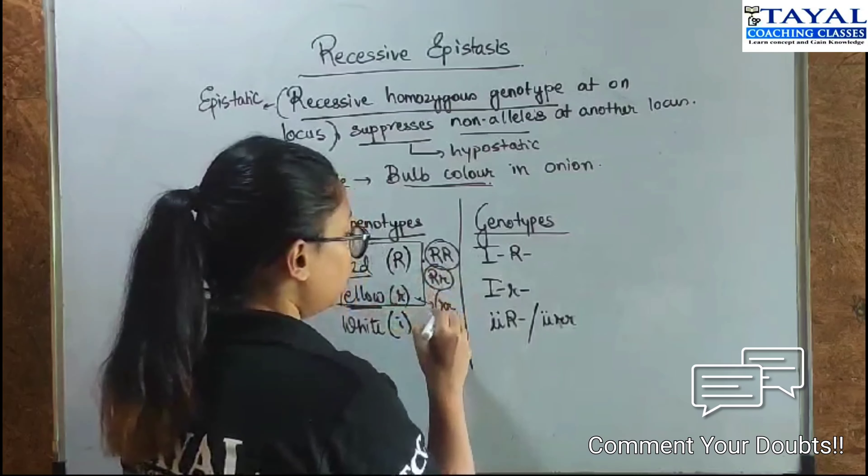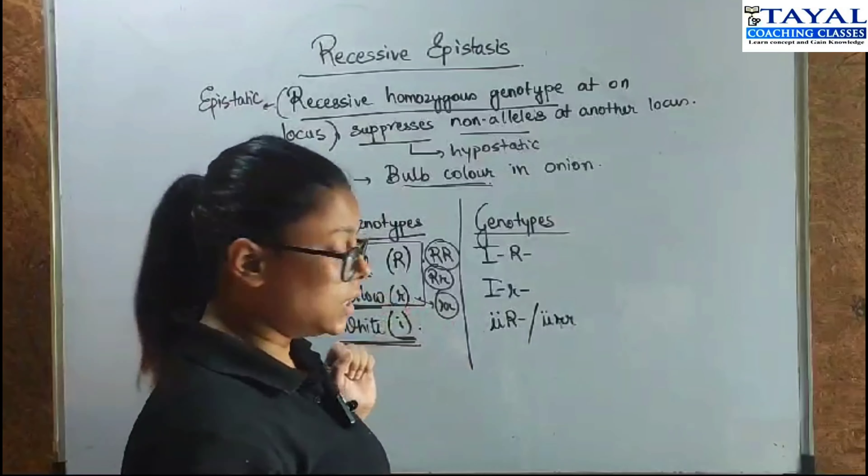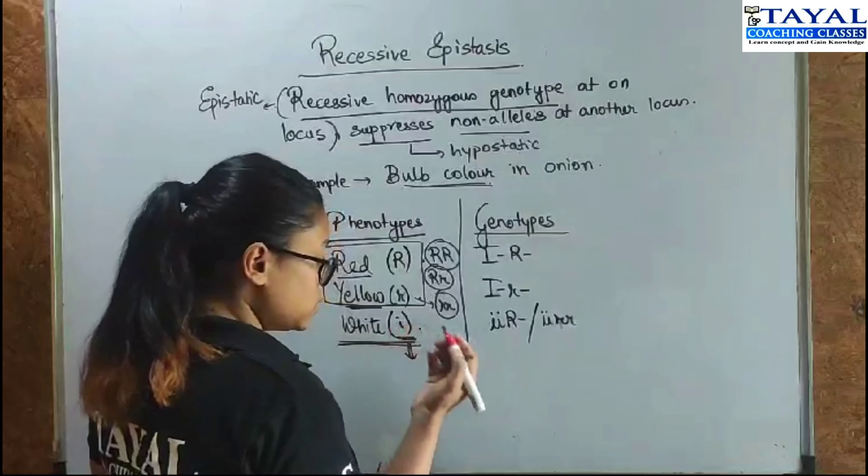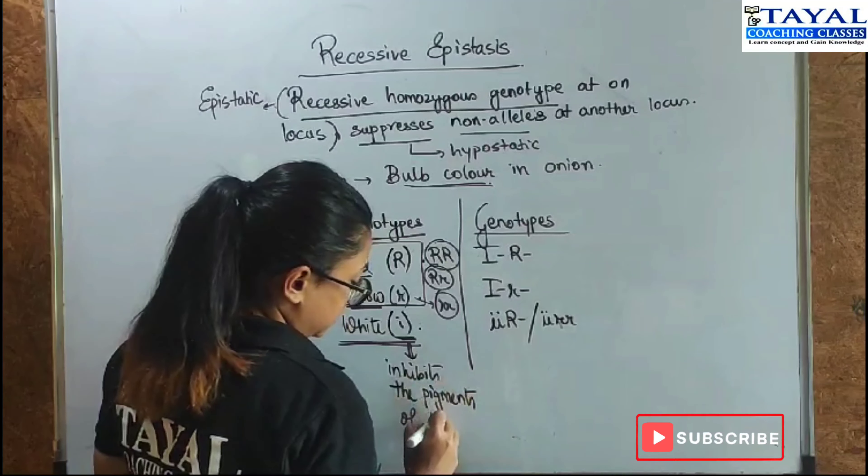But however, in this case, there is a gene called the I gene or the inhibitor gene which produces a protein which inhibits the pigment of the hypostatic gene.